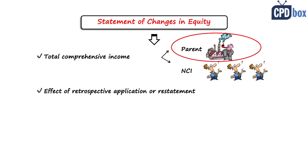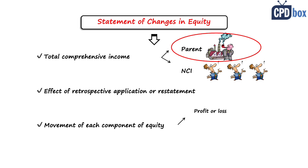For each component of equity separately, we must report effects of retrospective application or restatement recognized according to IAS 8. Remember, there was a change in accounting policy in this example, so we will report that separately. We also need to report movements for each component of equity separately — it is in fact a reconciliation between the carrying amount at the beginning and at the end of the reporting period, disclosing separately profit or loss, other comprehensive income, and transactions with owners such as share issues and dividends.